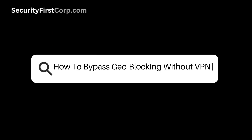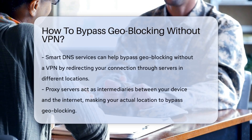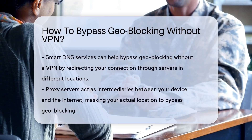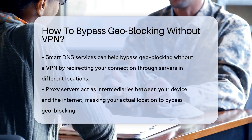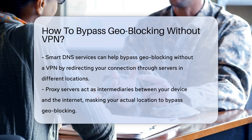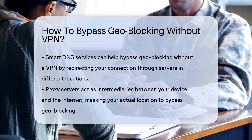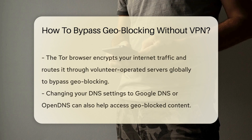Geoblocking can be circumvented without a VPN by using smart DNS services. These services redirect your connection through servers in different locations, tricking websites into thinking you're in an allowed region. Another method is using proxy servers, which act as intermediaries between your device and the internet, masking your actual location.